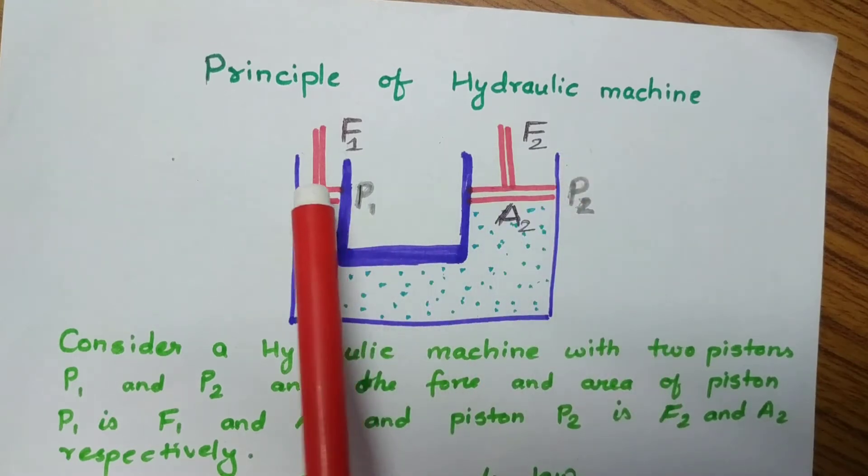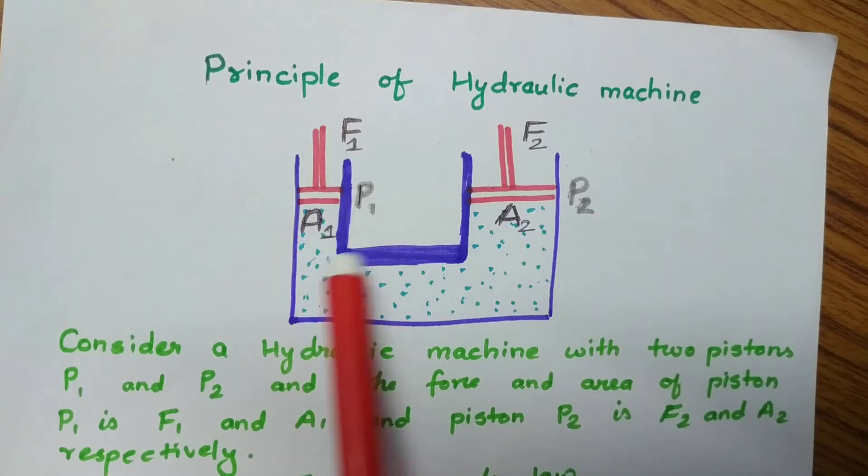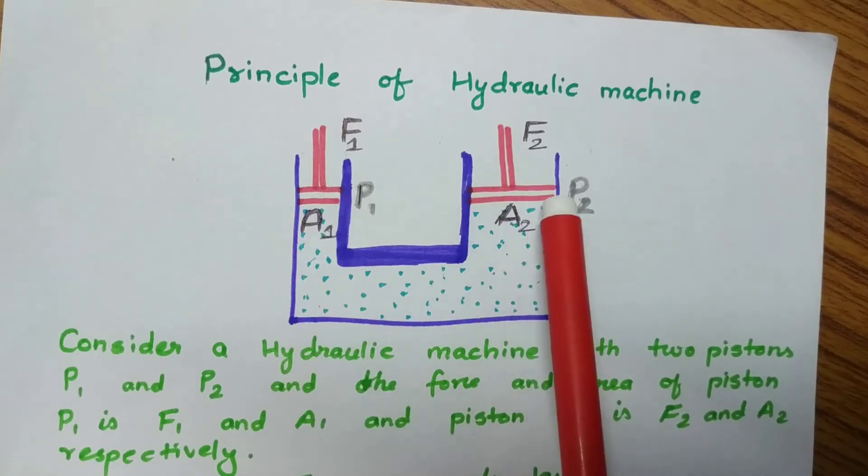Piston P1 is smaller with area A1. The larger piston P2 has area A2. To summarize: a hydraulic machine with two pistons where the force and area of piston P1 is F1 and A1, and piston P2 is F2 and A2 respectively.